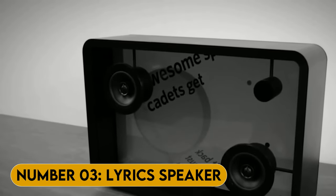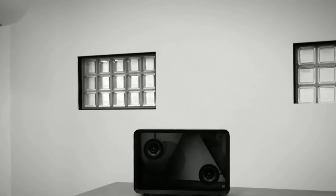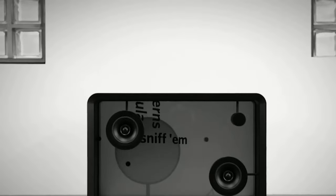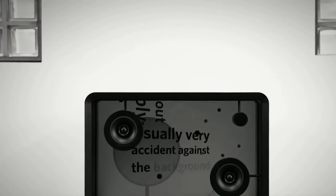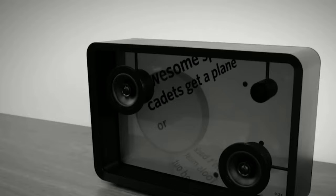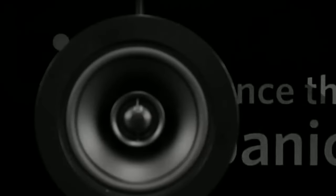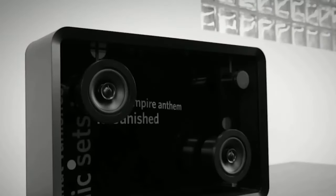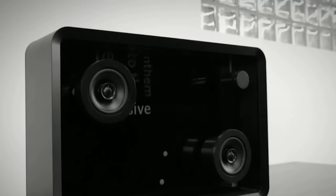Number 3. Lyrics Speaker. Now, this is a speaker that displays the lyrics of the song you're listening to on the front panel of the device. It's like having your very own karaoke machine right in your bedroom. But it's not just any karaoke machine. Oh no. The Lyric Speaker uses advanced AI technology to sync the lyrics perfectly with the music. So, you'll never miss a beat.